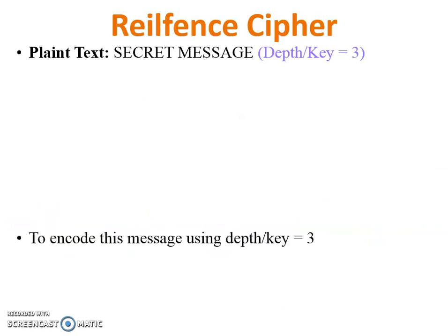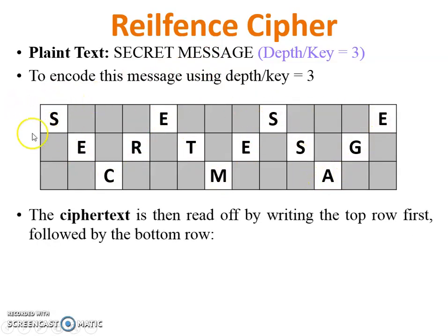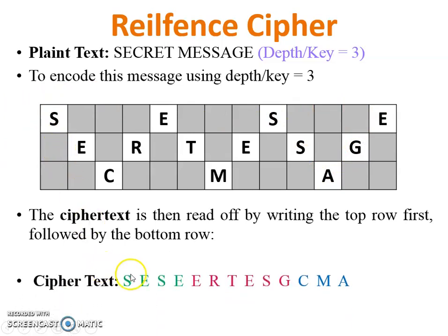Now with depth or key equal to 3, you can write the table with the plain text 'secret message' arranged in 3 rows in zigzag manner. Then read the cipher text row by row: first row S-E-S-E, second row E-R-T-E-S-G, then third row C-M-A. So this is the cipher text for key equal to 3.